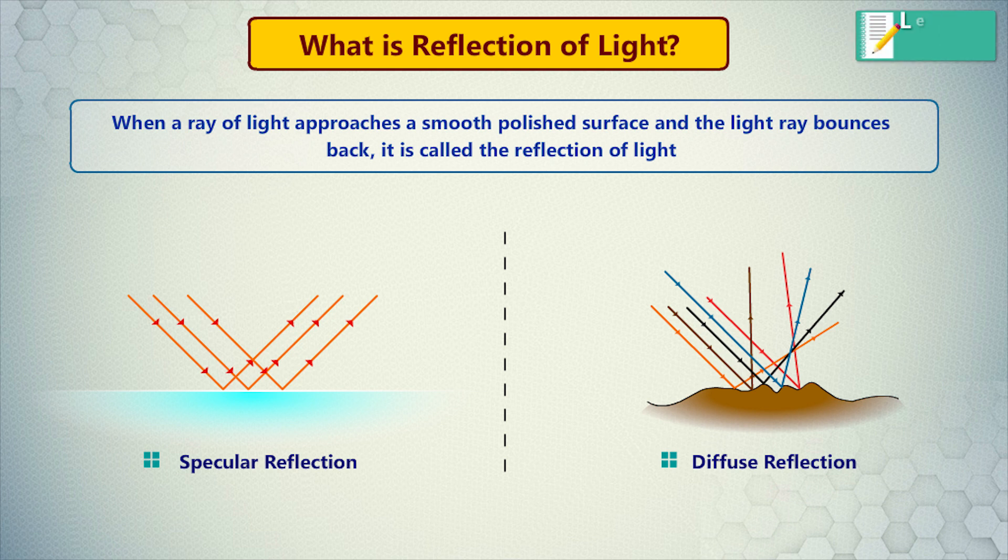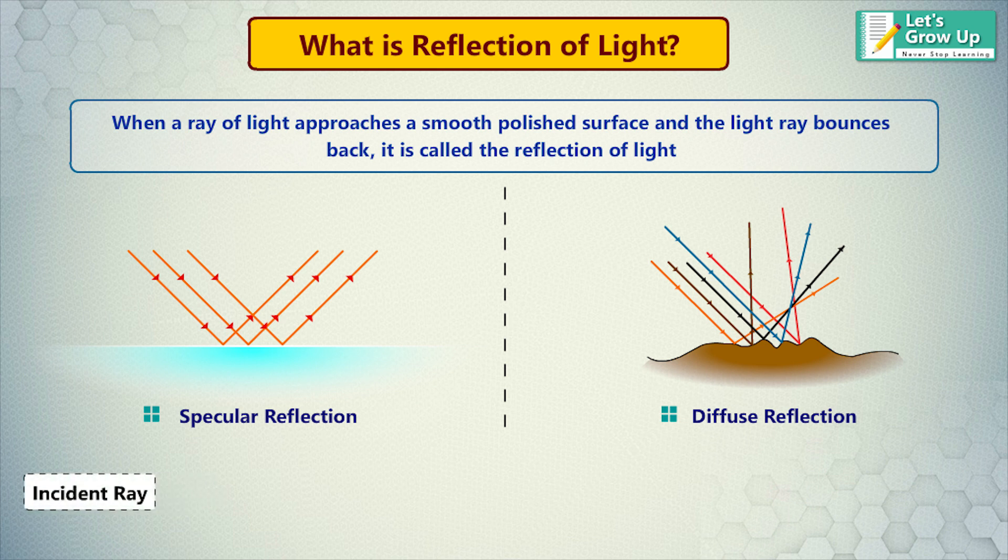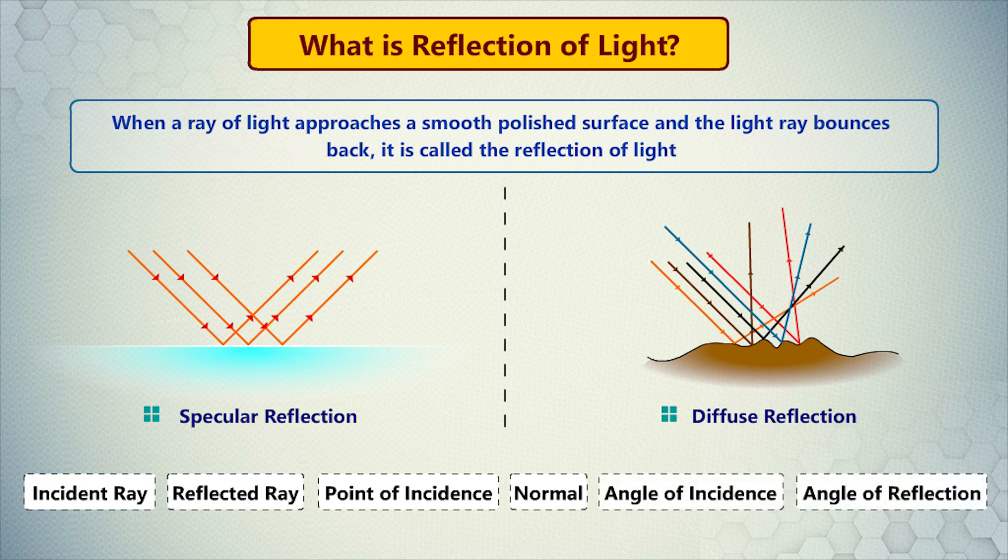For better understanding, we will learn about some important terms of light, such as incident ray, reflected ray, point of incidence, normal, angle of incidence, and angle of reflection.